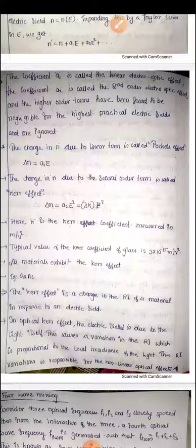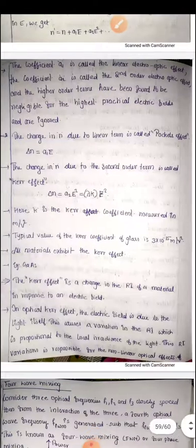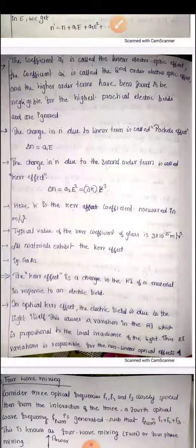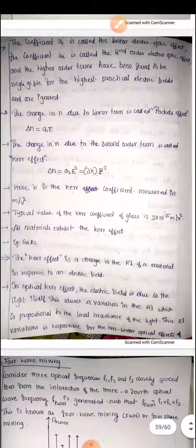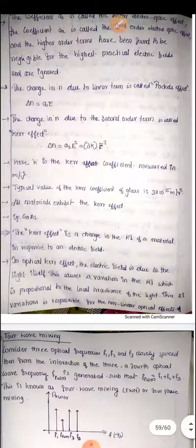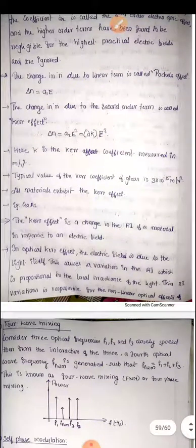The typical value of the Kerr coefficient for glass is 3 × 10⁻¹⁵ meters per volt squared. The unit of the Kerr coefficient is meter per volt squared. All materials exhibit the Kerr effect. For example, gallium arsenide also exhibits the Kerr effect.